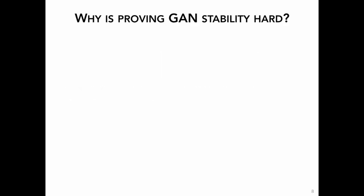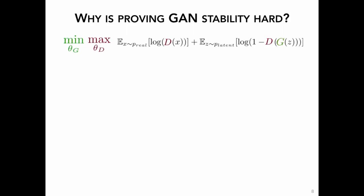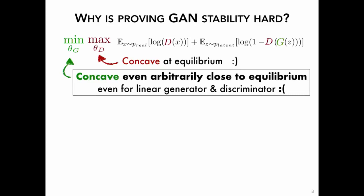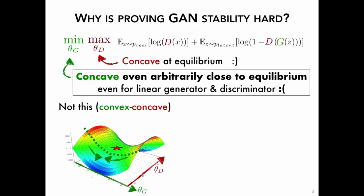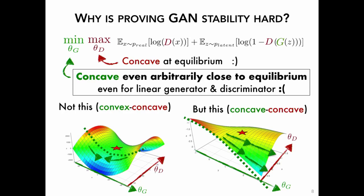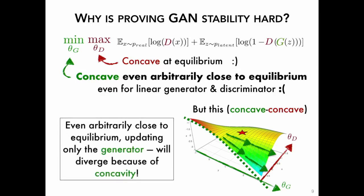Let me first convince you that proving GAN stability is actually non-trivial. Near the equilibrium, the objective is concave in terms of the discriminator parameter — this is good for us. But unfortunately the objective is also concave in terms of the generator parameters, even arbitrarily close to equilibrium. This is true even with a linear discriminator and generator model, not just because of deep architecture. So we do not have a convex-concave problem with nice guarantees — what we have is a concave-concave problem. In a concave-concave problem, there are regions arbitrarily close to equilibrium where if you freeze the discriminator and update only the generator multiple times, you might simply diverge because of the concavity.